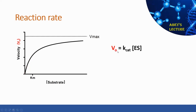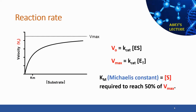The rate of the reaction or V0 is given by kcat times the concentration of the enzyme-substrate complex, and Vmax is given by kcat times the concentration of total enzyme. There is also a constant known as Km, or the Michaelis constant, which refers to the concentration of substrate required to reach 50% of the maximum velocity.